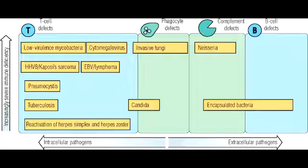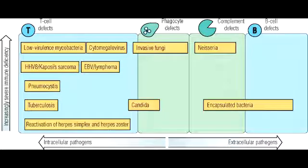What are granulocytes? Granulocytes are white blood cells that have granules in their cytoplasm. There are three granulocytes: basophils, eosinophils, and neutrophils. This can be remembered with the mnemonic BEN — B-E-N.